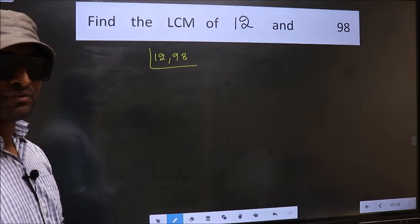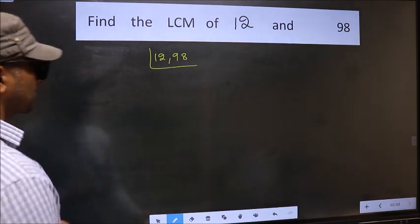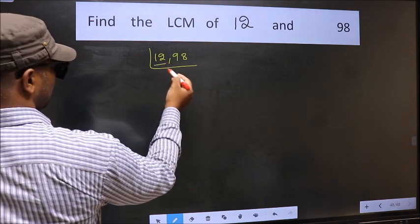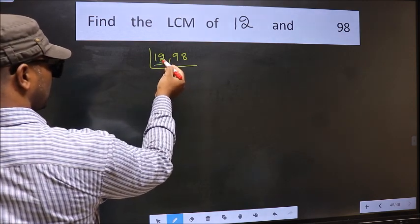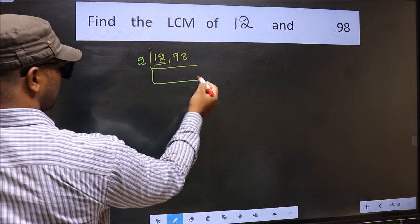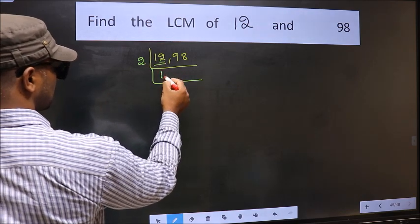Now you should focus on the first number which is 12 here. For this number, last digit is even so take 2. When do we get 12 in the 2 table? 2, 6, 12.